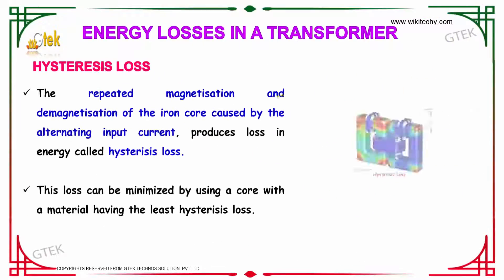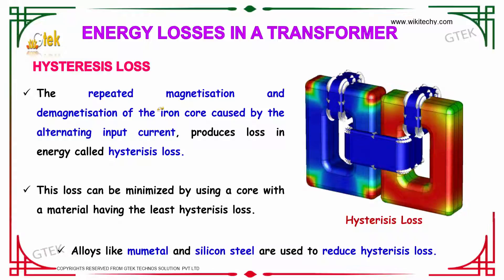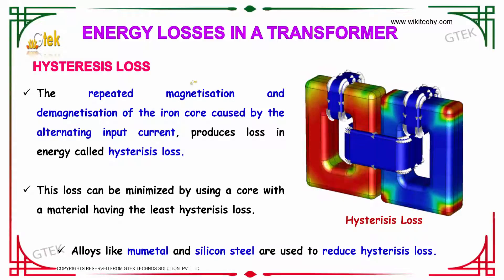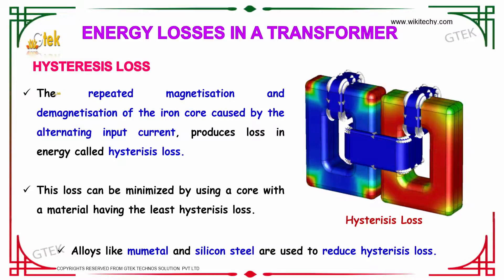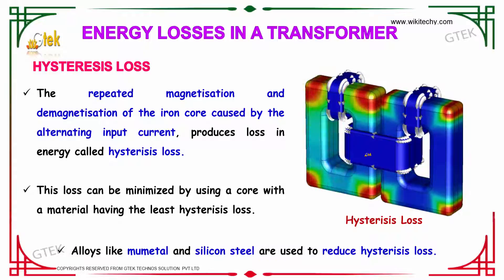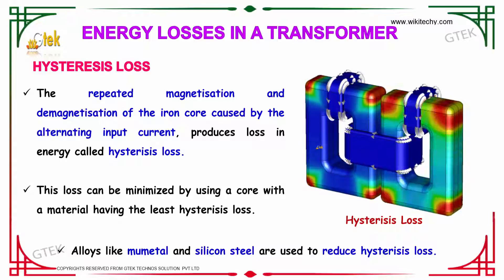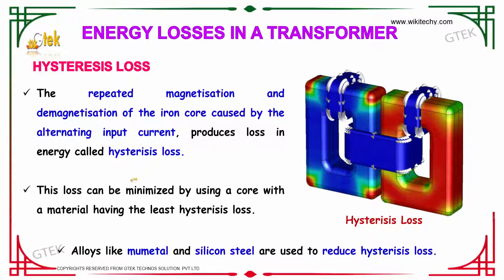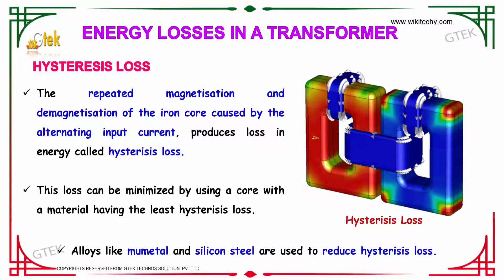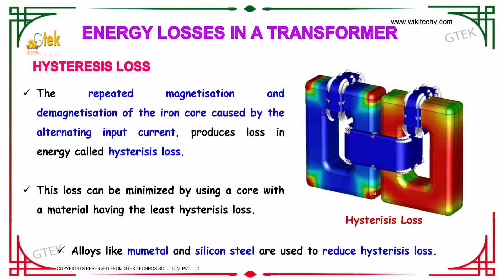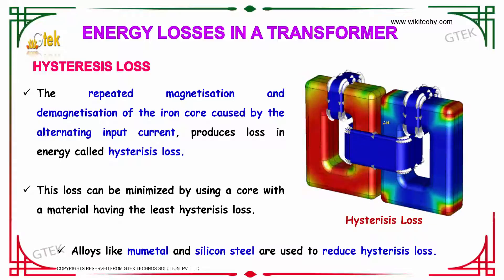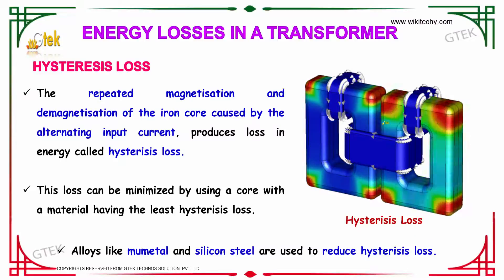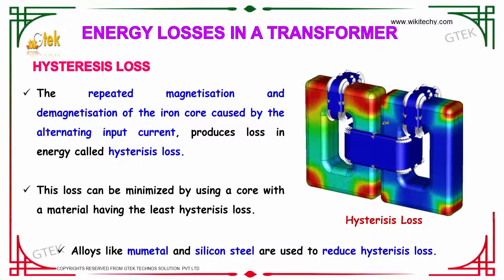What are the losses? The first loss is hysteresis loss. The repeated magnetization and demagnetization of the iron core caused by the alternating input current produces a loss in energy. This loss can be minimized by using a core material having the least hysteresis loss. Alloys like mumetal and silicon steel are used to reduce the hysteresis loss.